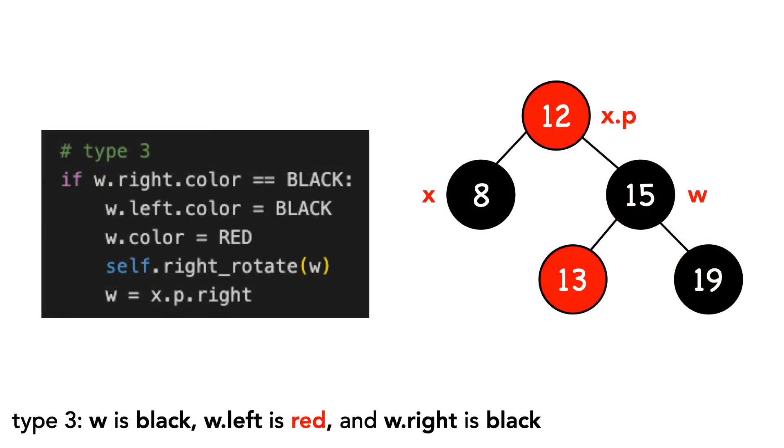Here's fix type 3, where w is black, w.left is red, and w.right is black. We set w.left's color equal to black. We set w to red.